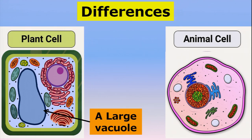With this we come to the end of this chapter. We learned about the definition of the cell, the structure of the cell and its organelles, and how the cell is the structural and functional unit of life. Thank you, friends.